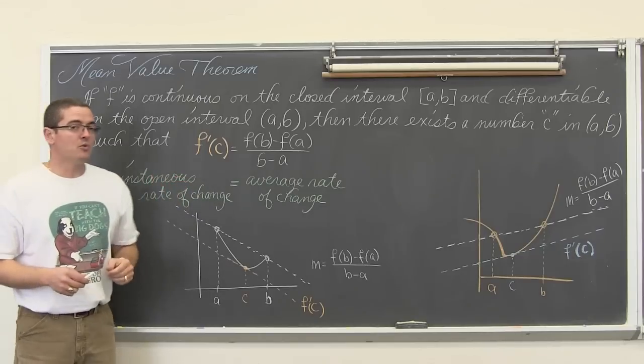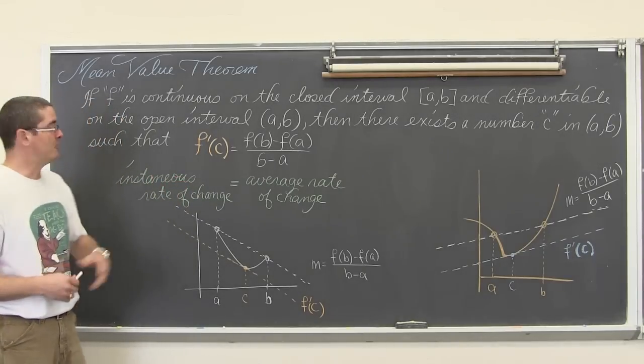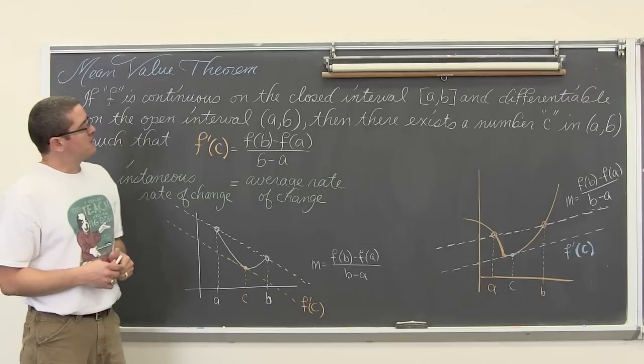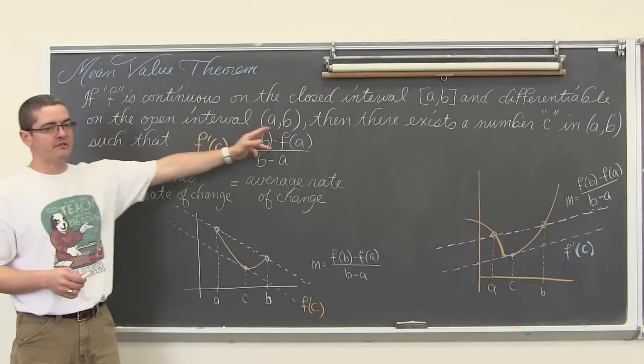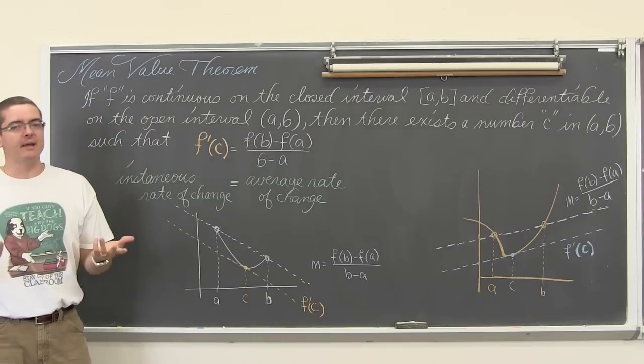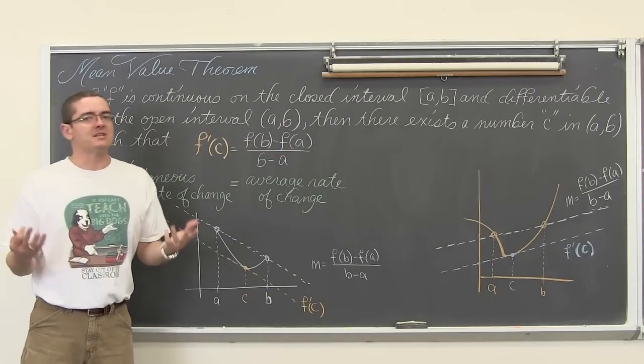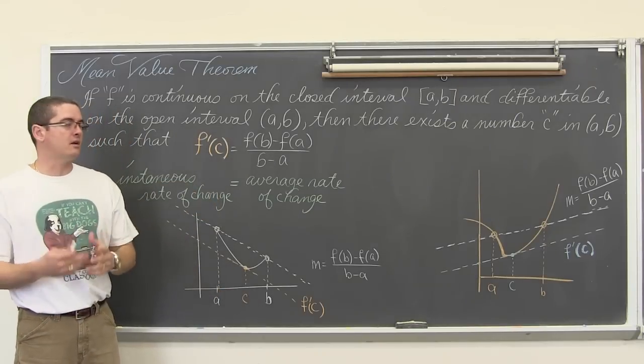The mean value theorem will say something that sounds very similar but we don't have to have slopes equal to zero. If f is continuous on the closed interval [a,b] and it is differentiable on the open interval (a,b) then there exists a number c. Remember we are talking about independent variables, x values.